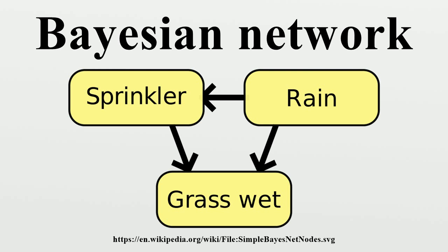The model can answer questions like: what is the probability that it is raining, given the grass is wet, by using the conditional probability formula and summing over all nuisance variables. Using the expansion for the joint probability function and the conditional probabilities from the conditional probability tables stated in the diagram, one can evaluate each term in the sums in the numerator and denominator.